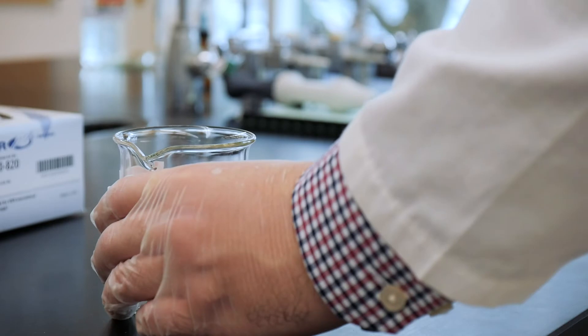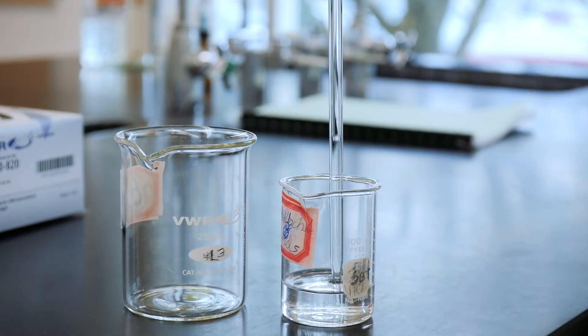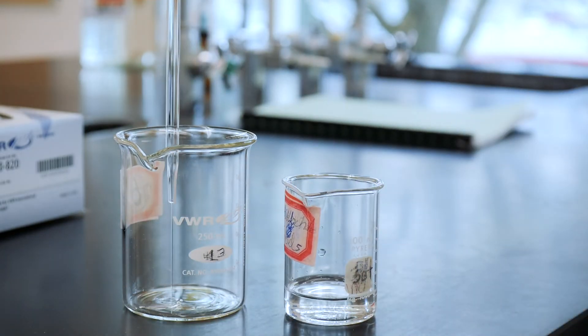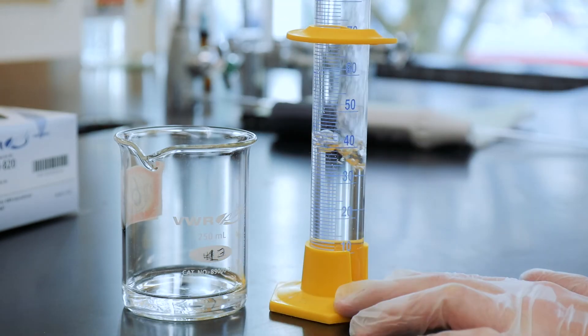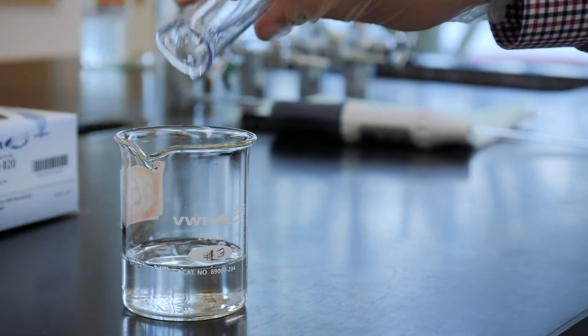Pipette 25 ml of the phosphoric acid solution into a clean 250 ml beaker. Then add 50 ml of deionized water so that there is enough liquid to immerse the pH electrode.